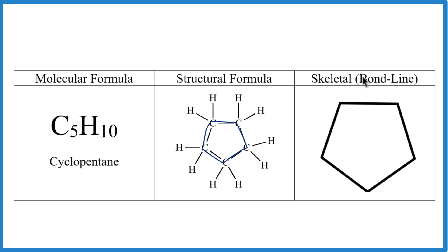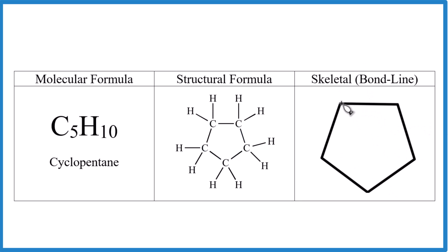And note, it could have the point on the top. This could be rotated. And so at these corners, we have carbon, carbon, carbon, carbon, carbon. And we know each carbon is going to have four bonds.